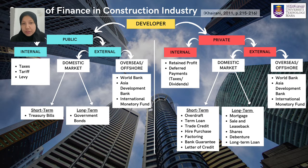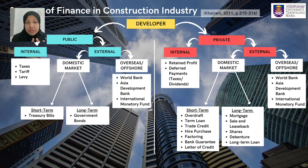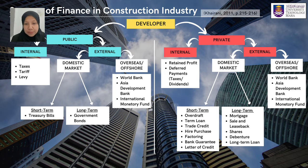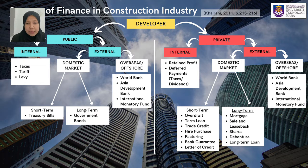For private developers, they also have internal and external source options. Internal sources come from return on profits or deferred payments such as taxes and dividends. External domestic market options include overdraft, term loan, trade credit, letter of credit, hire purchase, factoring, and bank guarantee for short-term finance. They can also apply for funds from international financial institutions such as the World Bank, Asian Development Bank, and IMF.